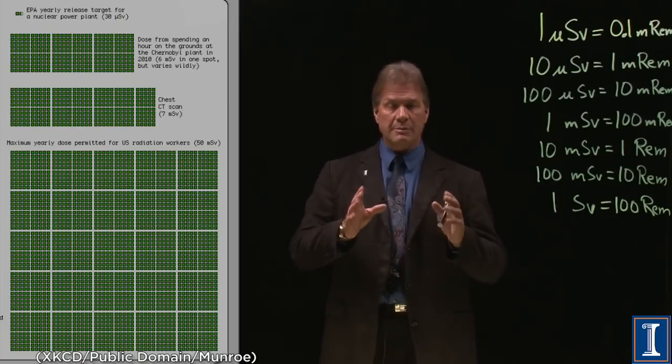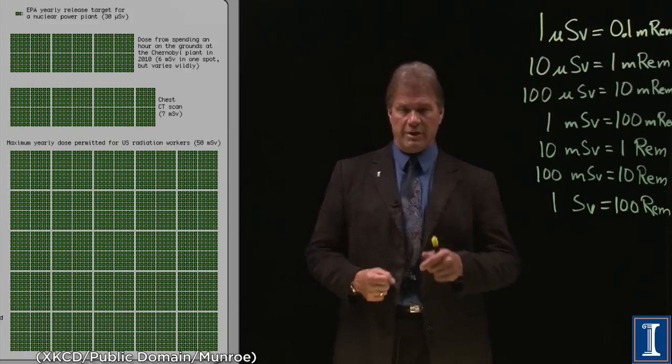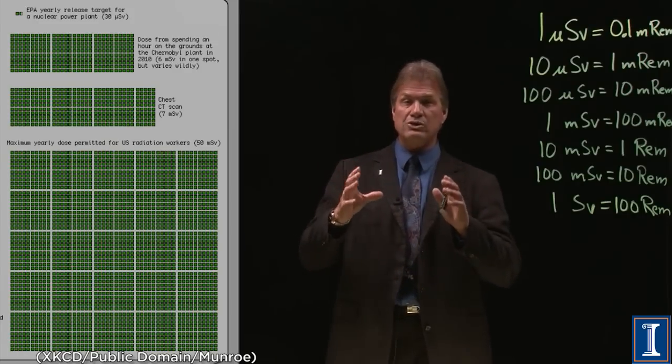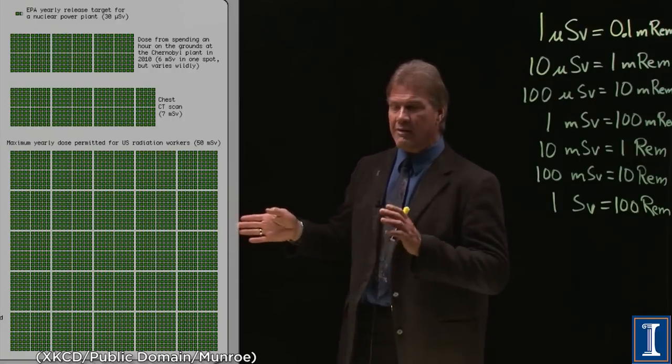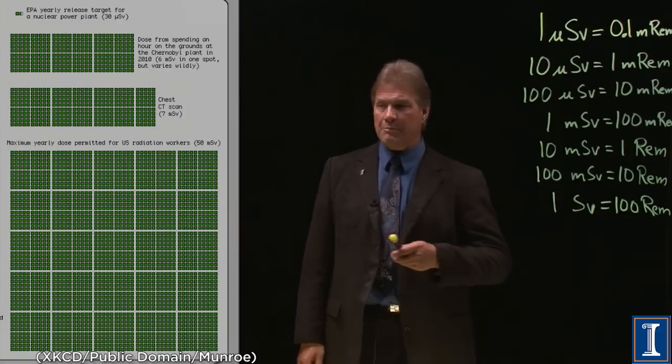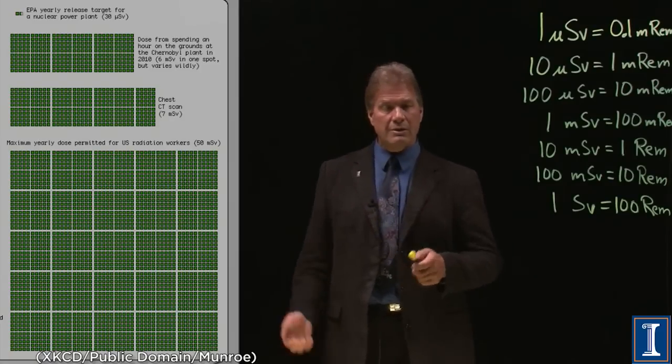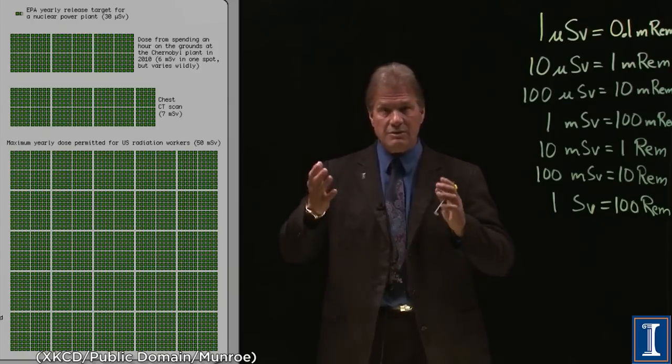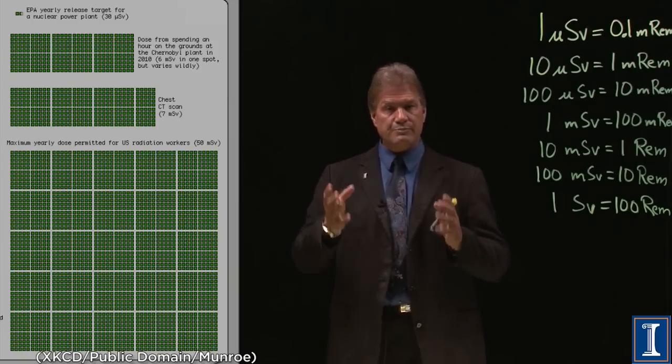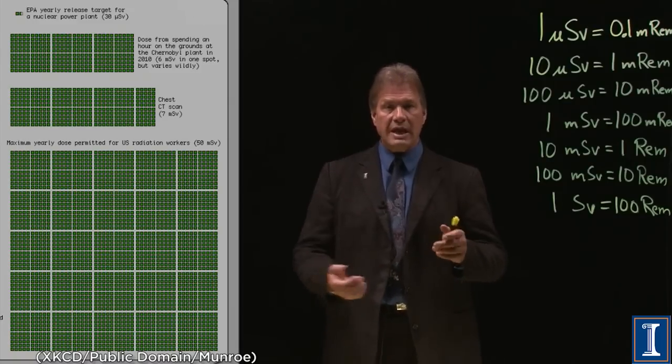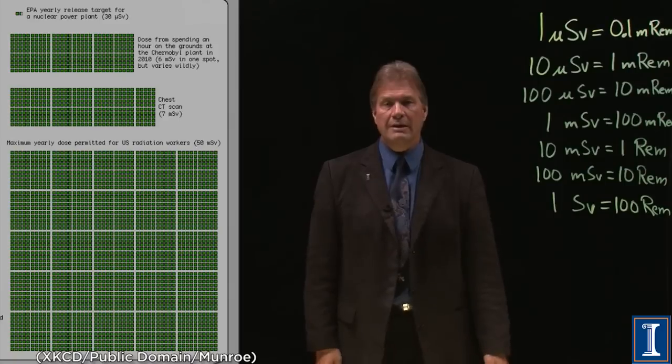50 millisieverts. Now, they actually limit it per quarter, so you can't, like, last day of the year I get my 5 rem, the next day I get my whole next 5 rem. They say 1.25 per calendar quarter. But you still see we haven't talked about health effects. That is because even if you're a worker and you get 5 rem, and you go to the doctor and say, 'Doctor, doctor, I think I've hit my limit for exposure as a radiation worker. Test me, test me. I want to see how sick I've become.' They can't tell.